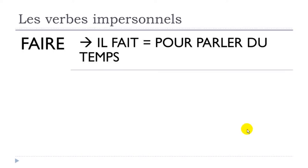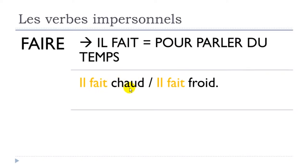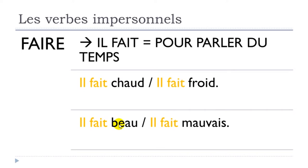The second example is faire. It's really useful to use il fait if you want to talk about the weather — pour parler du temps. For instance: il fait chaud — chaud means 'warm' or 'hot' — so il fait chaud means 'it is hot.' Same thing if you want to say it is cold: froid is cold, so il fait froid. If you want to talk about nice weather: il fait beau. The opposite, mauvais means 'bad': il fait mauvais, meaning 'it's bad weather.'